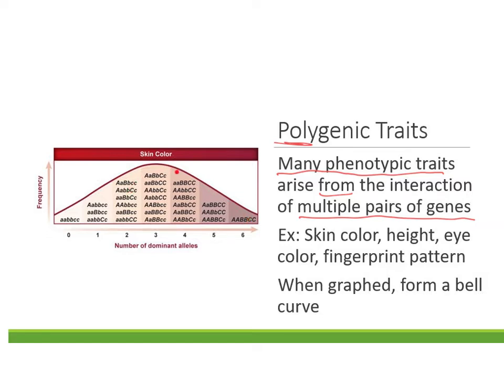As you move toward the middle colors — more medium skin tones — you see higher frequency. The same goes for height: you see very few really short people, very few really tall people, and a lot of people in the middle. Make sure you know polygenic traits: you get multiple phenotypes from multiple pairs of genes, and you can link examples like skin color or height to polygenic traits.